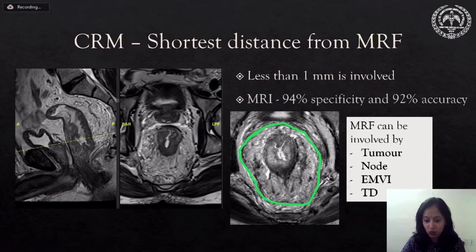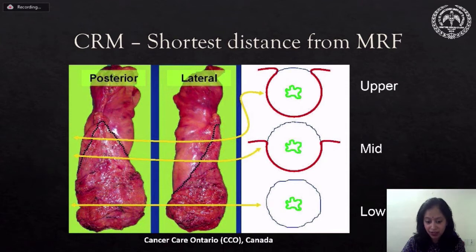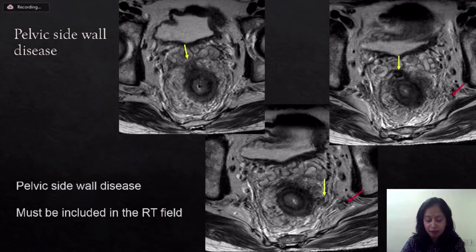When the distance is less than one millimeter, it is called an involved CRM. CRM interpretation on MRI is highly accurate and one must remember to interpret CRM only along the invading margin of the growth. CRM is a concept meant to be used only for the portion of the rectum enveloped by the mesorectal fascia, and not for the peritonealized portion of mid and high rectum. Pelvic sidewall nodes must be recognized, reported, and included in the radiation field.